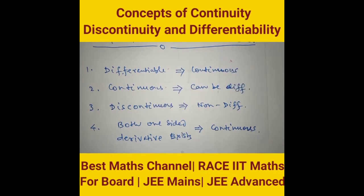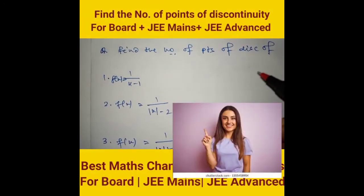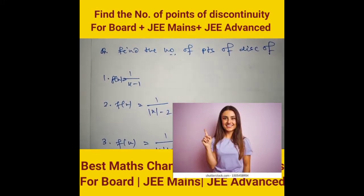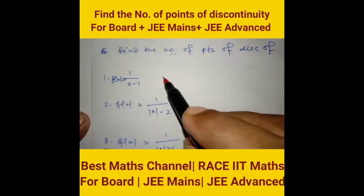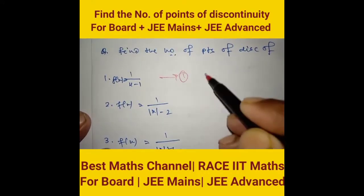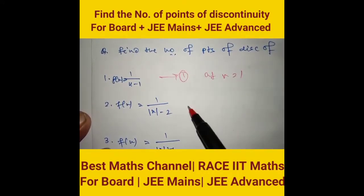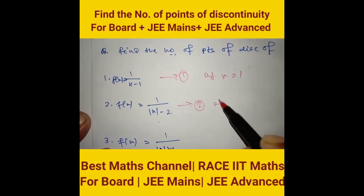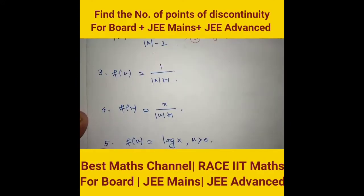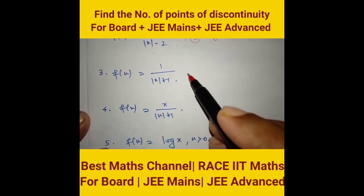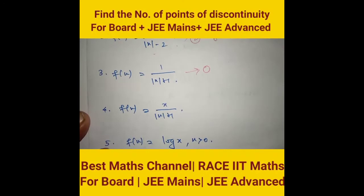Find the number of points of discontinuity: wherever the denominator is zero, the function is undefined and therefore discontinuous. For the first function, number of points of discontinuity is 1 at x = 1. For the second, it is 2 at x = ±2. For the third, the denominator is never zero, so number of points of discontinuity is 0.